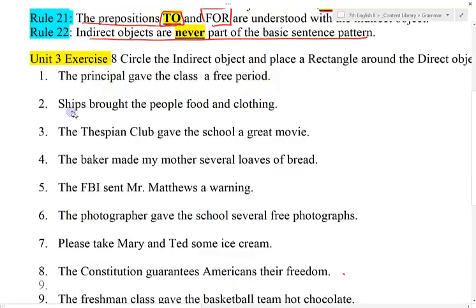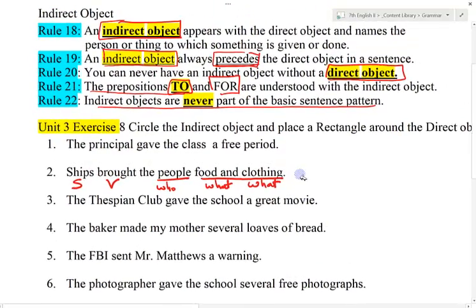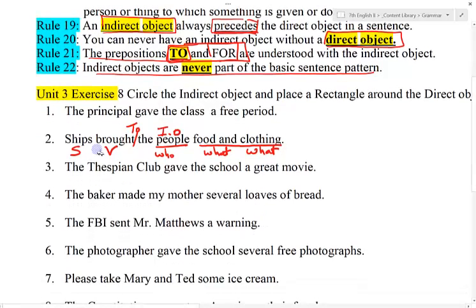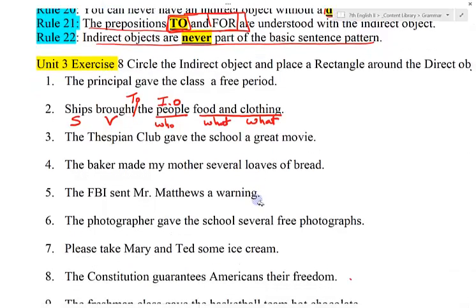Ships is the subject. Brought is the verb. People is who. Then I've got food and clothing. Going back to the rules, the indirect object always precedes, and you can insert to or for in front of it and it still makes sense: ships brought to the people food and clothing. So when we say that an indirect object is to whom or for whom something is given or done, you can see that in this sentence.